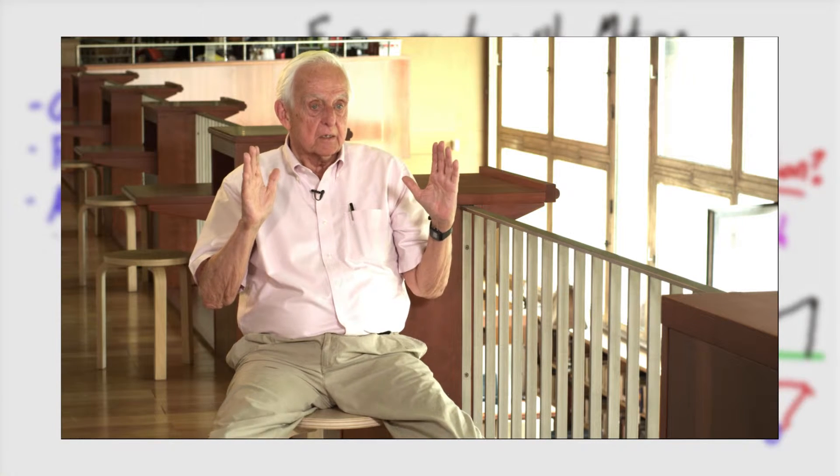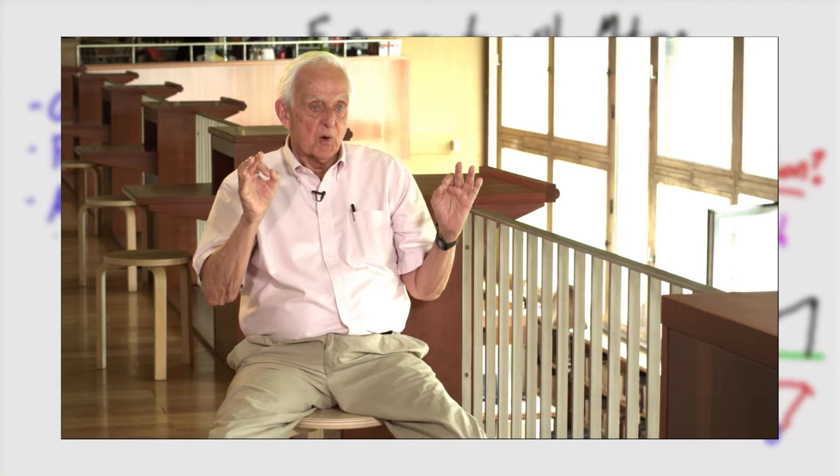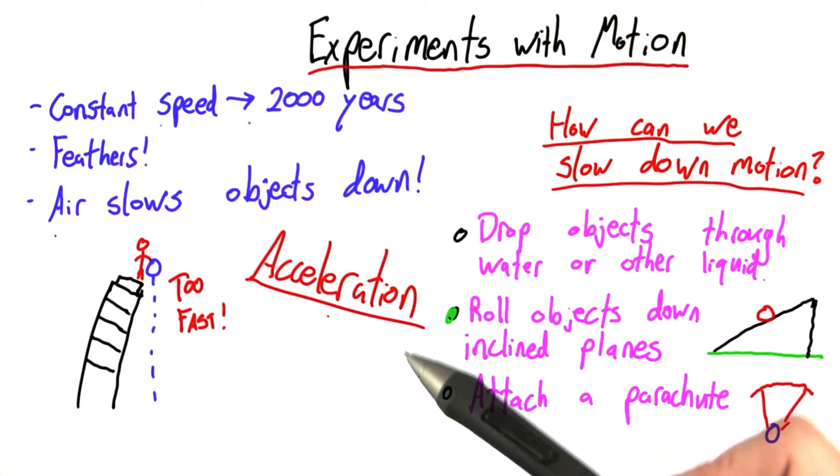What he begins to find is that he's never getting uniform motion. What he's getting always is acceleration. So he's finding acceleration. It seems like this experiment is actually making some progress in disproving Aristotle.